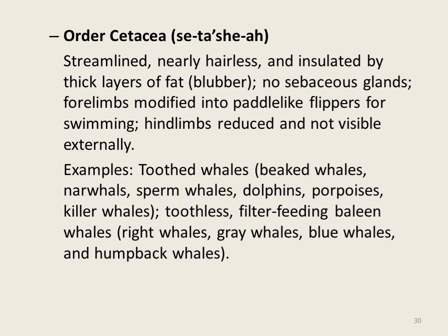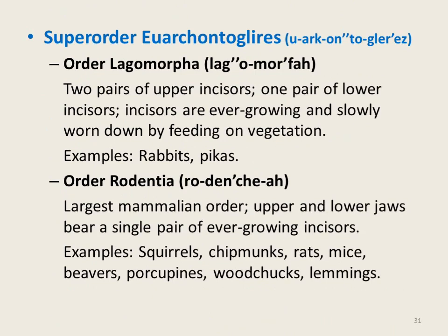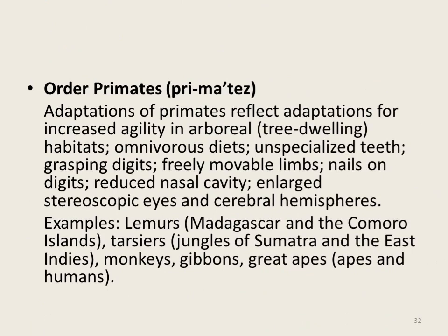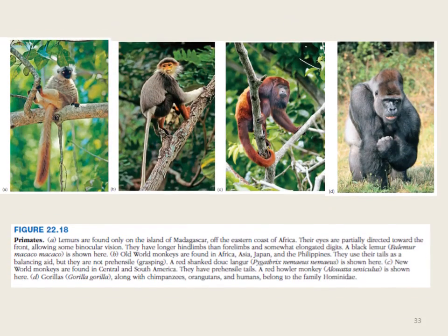The sixth order of Laurasiatheria is Cetacea, which includes toothed whales and toothless baleen whales. The fourth superorder of infraclass Eutheria is Euarchontoglires, further divided into three orders: order Lagomorpha, which includes rabbits and pikas; order Rodentia, which includes mice, squirrels, rats, lemmings, chipmunks, and beavers; and order Primates, which includes monkeys, gibbons, lemurs, great apes, and humans.